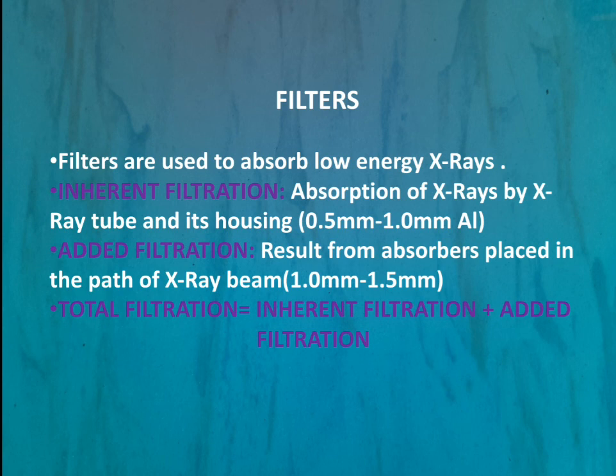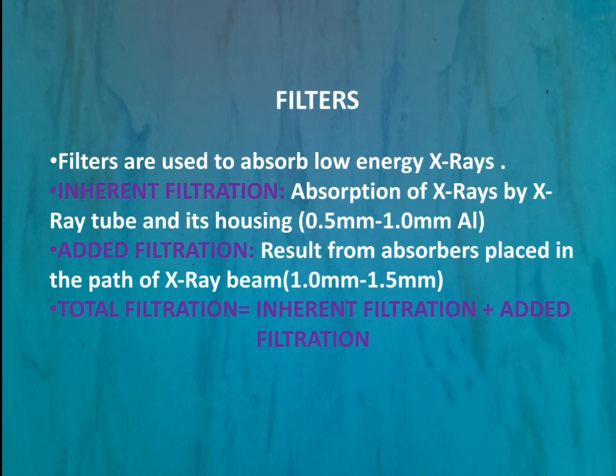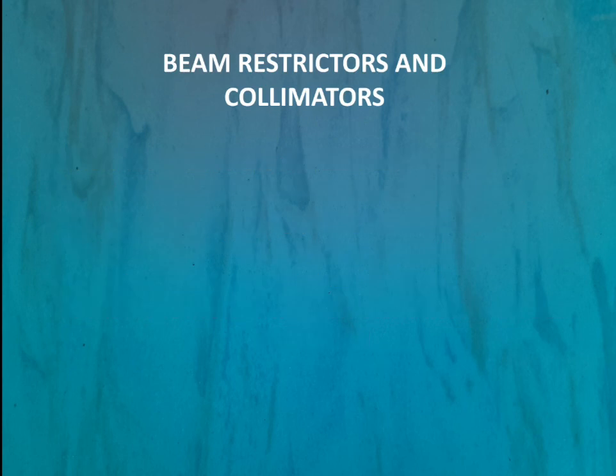Added filtration refers to filters placed in the path of the x-ray beam. Filters placed within the x-ray tube or its housing are inherent filters, while those placed in the path of the x-ray beam are added filters. Total filtration equals inherent filtration plus added filtration. For added filtration, 1.0 mm to 1.5 mm aluminium material is used.